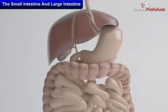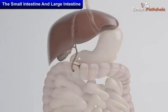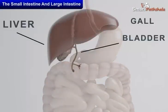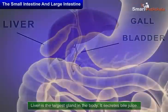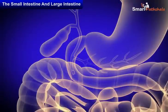The liver is a reddish-brown gland situated in the upper part of the abdomen on the right side. It is the largest gland in the body. It secretes bile juice, which is stored in a sac called the gallbladder.